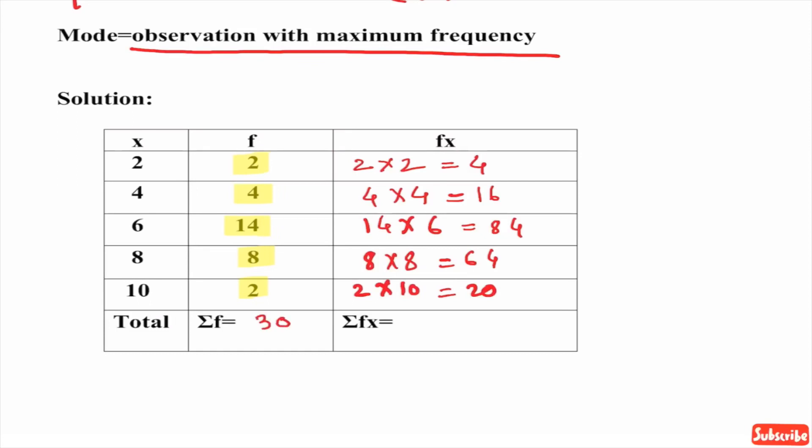Next, total is for fx. When we add 4, 16, 84, 64 and 20 we get the summation as 188. Now, we need here one more column and that is for LCF.